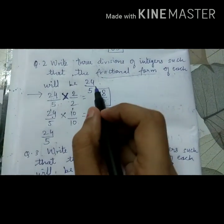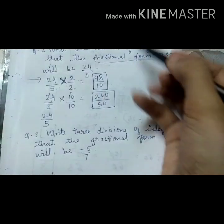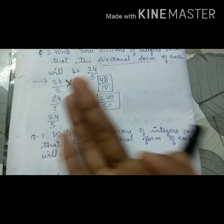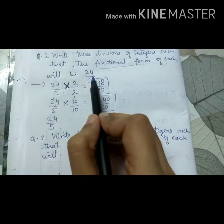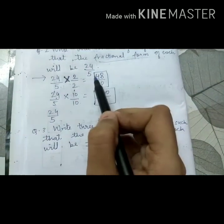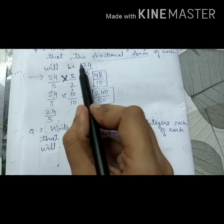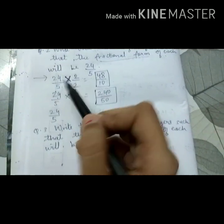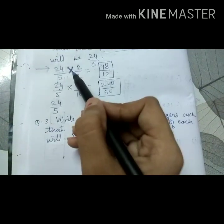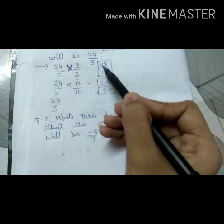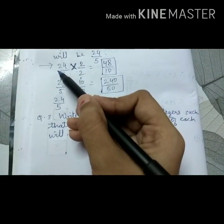So now you understood what's the question, that we have to write 3 division integers wherein when we divide all those 3 integers, our answer should be 24 upon 5. So basically we have to frame question for this answer. Now how we will frame a question? Just by multiplying. Simple. Because when we divide, what we do? We reduce it.